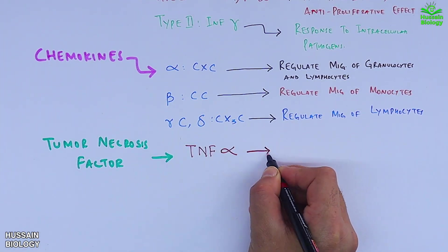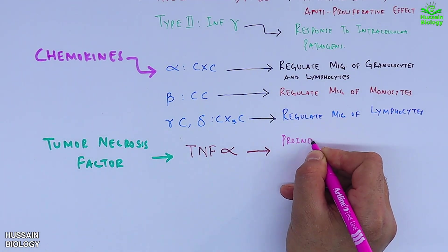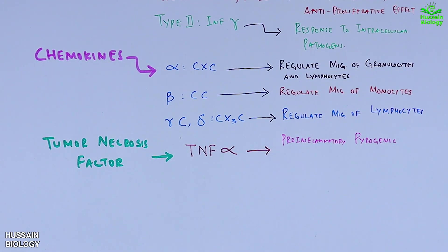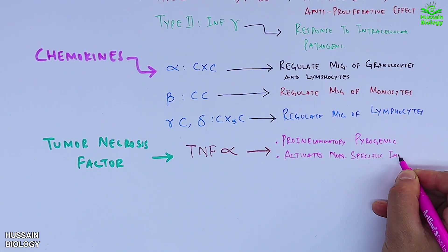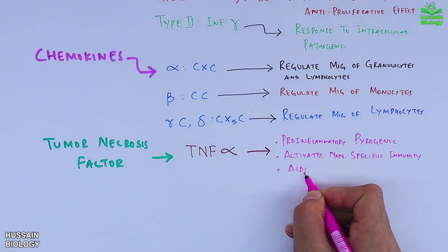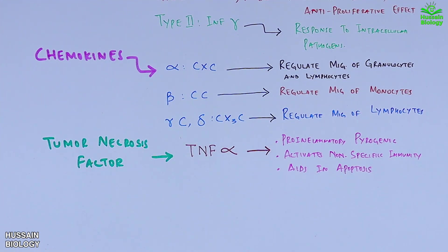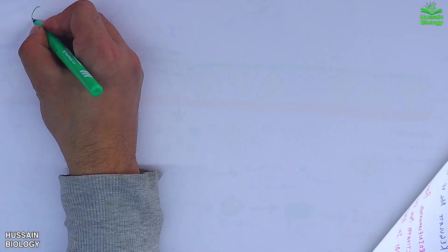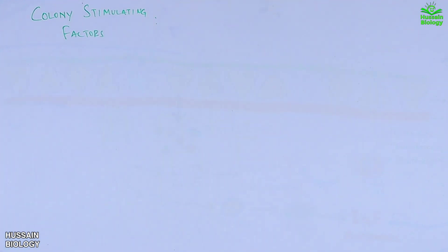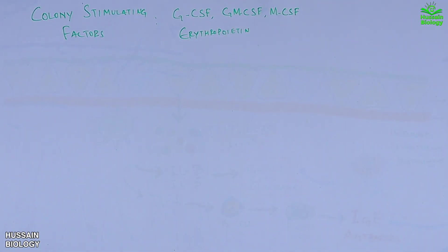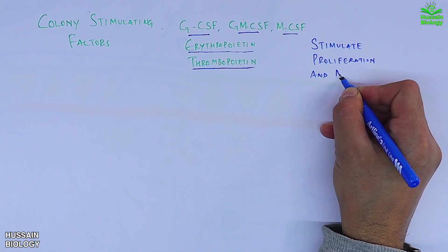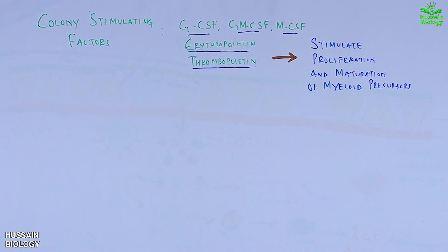Getting to tumor necrosis factors, we have TNF-alpha and TNF-beta. Both mediate pro-inflammatory and pyrogenic responses. TNF-alpha as well as TNF-beta also activate non-specific immunity and aid in apoptosis. The fifth family is the colony stimulating factors — G-CSF, GM-CSF, M-CSF, erythropoietin, and thrombopoietin — all of which stimulate proliferation and maturation of myeloid precursors.